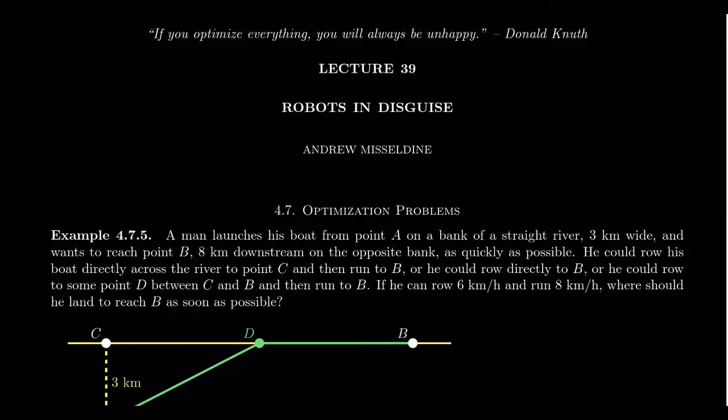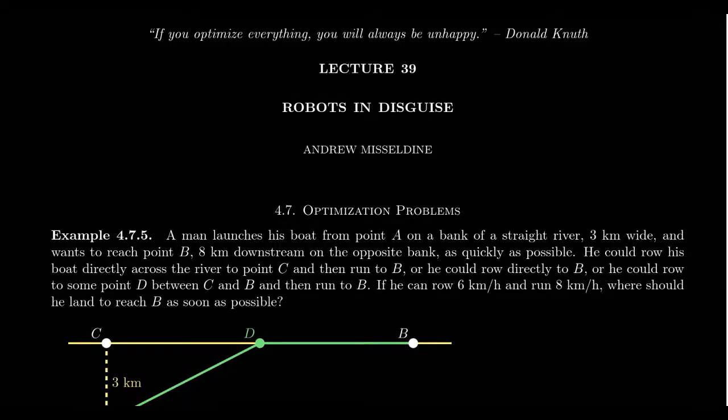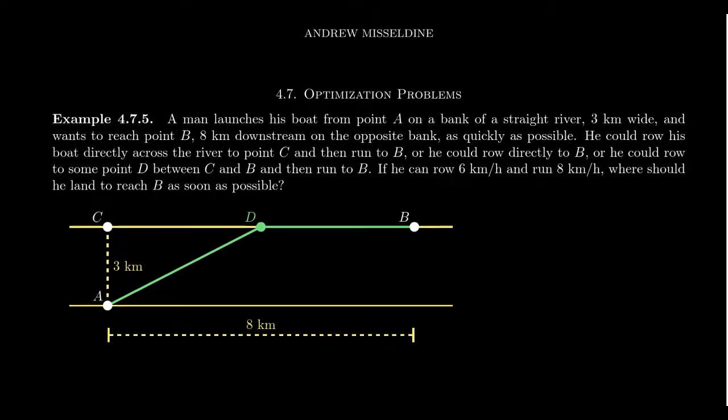We're going to look at some more optimization problems. Remember, optimization is all about either making a variable get the biggest possible it could be or the smallest possible it could be. There's some quantity we're trying to make big or get small, and we're trying to figure that out in this lecture.